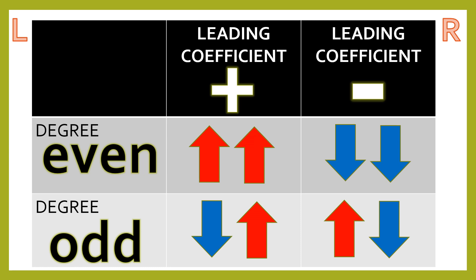You check first, is your leading coefficient positive or negative? If your leading coefficient is positive, and the degree is even, then the direction of the two ends of your graph is both going up. So, up-up. Rising on the left, rises also on the right.